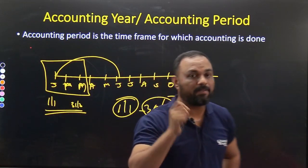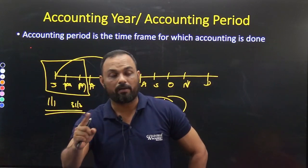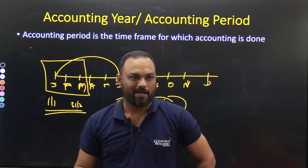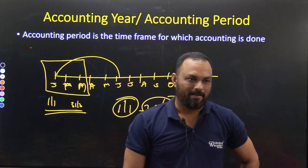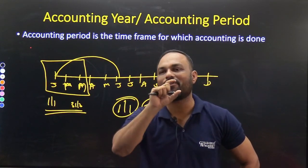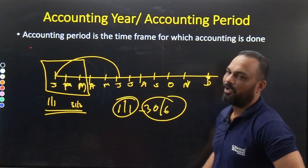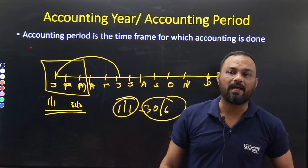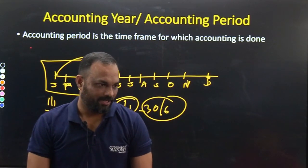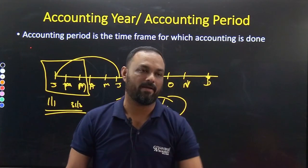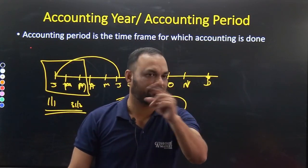It is very important to keep in mind that when we make accounts, we always have a definite starting point and a definite ending point. The time frame may be 1 month, 3 months, 6 months, or a maximum of 12 months. So the accounting period consists of 3 months, 6 months, or 12 months — the maximum period of an accounting period is 12 months, or 1 year.